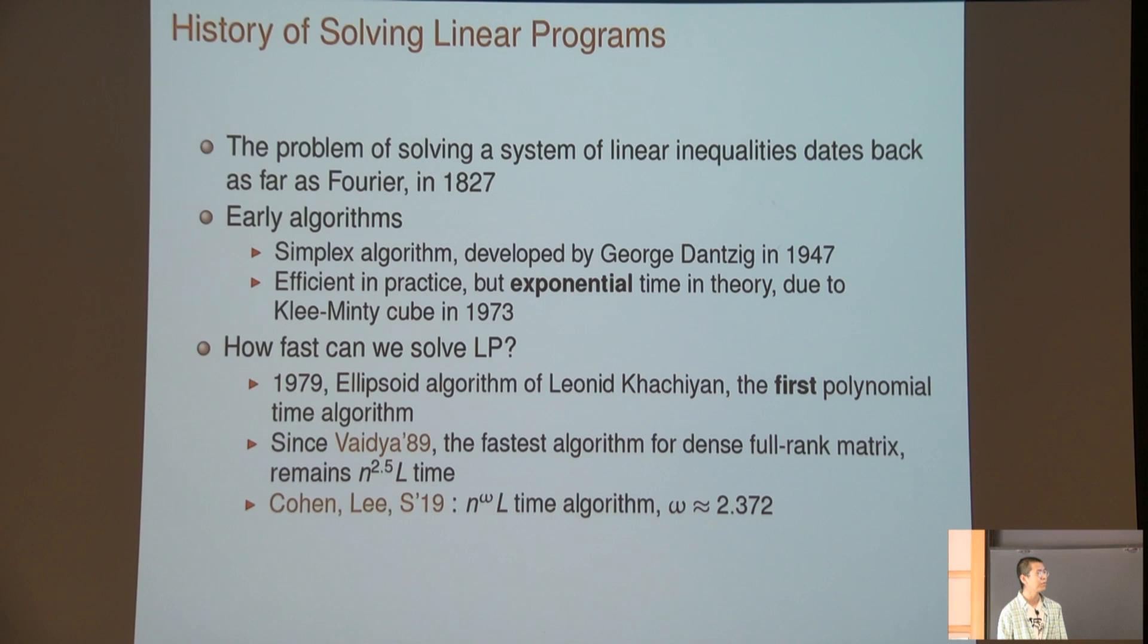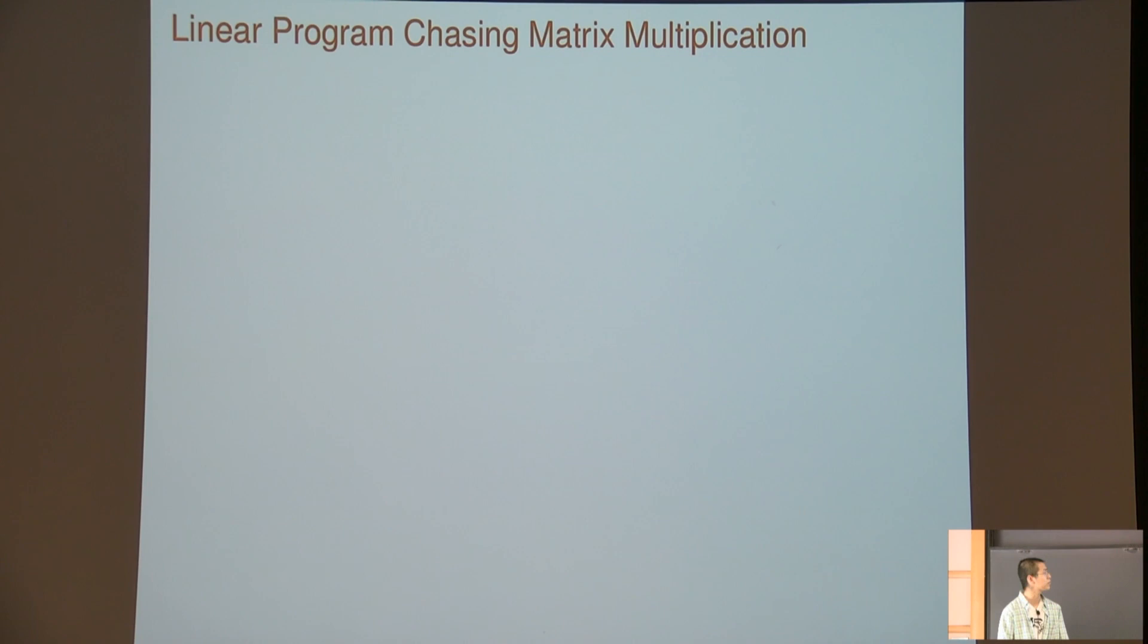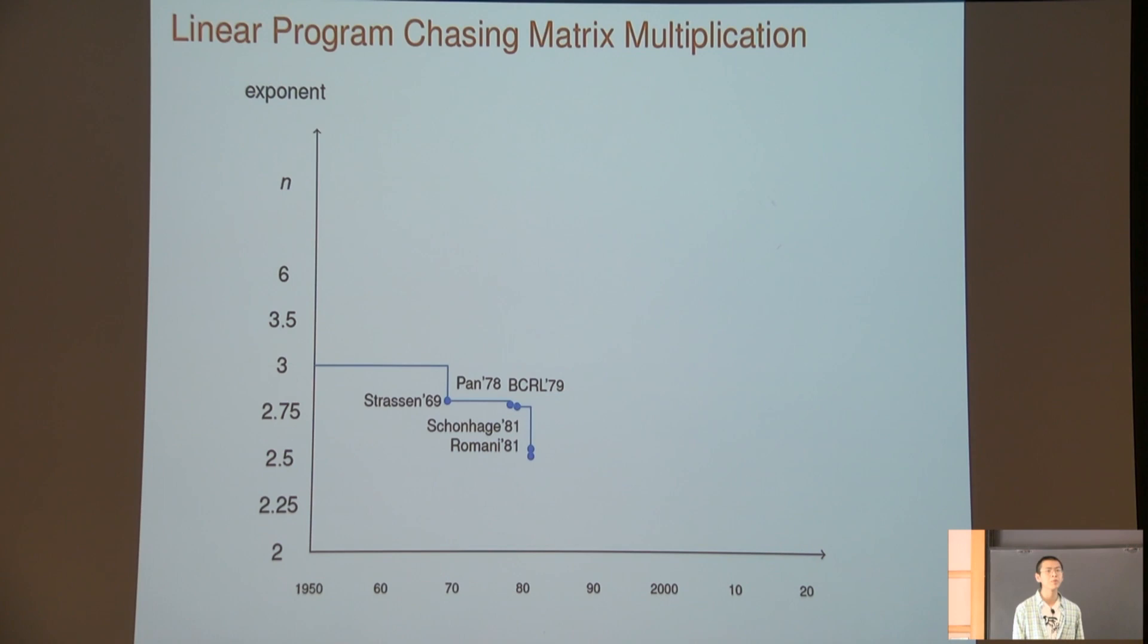Recently, we can show that you can actually solve linear programs in n to the omega plus o(1) time, where omega is the exponent of matrix multiplication. Omega means if I give you two square matrices, each side n by n, and you want to multiply them to output another n by n matrix, the time is n to omega. Naively it can be done in n-cubed time, and we believe it can be done in n-squared time somehow, but currently the best constant we know is 2.372. Here is an interesting picture showing how the history of linear programs compares to matrix multiplication. The y-axis is the exponent and the x-axis is time.